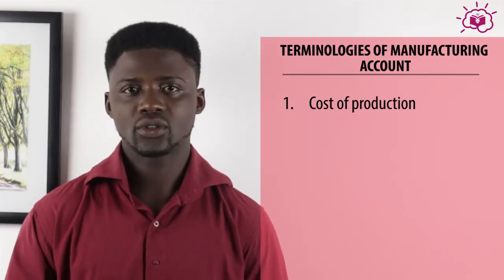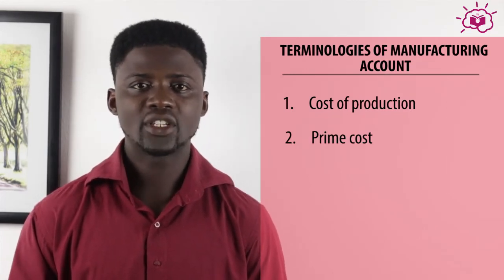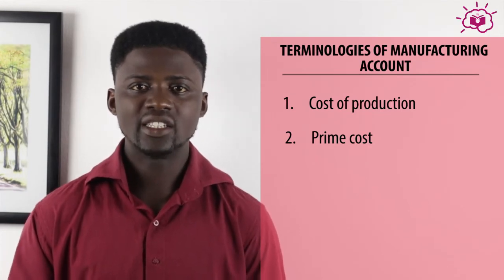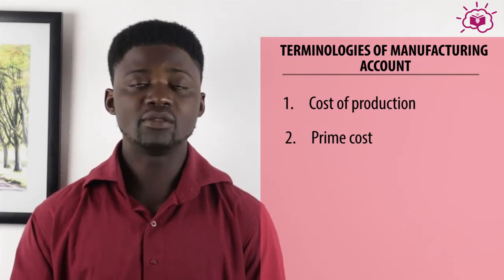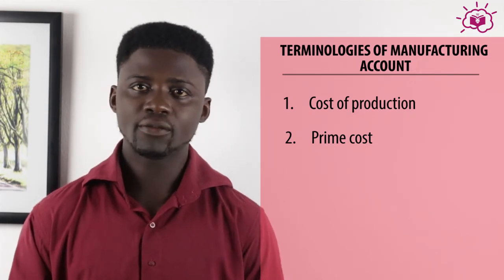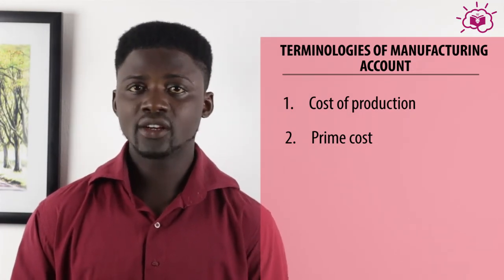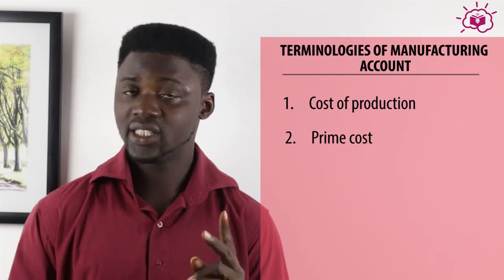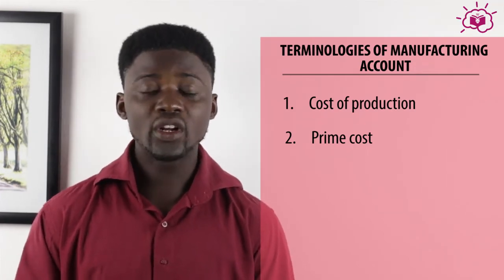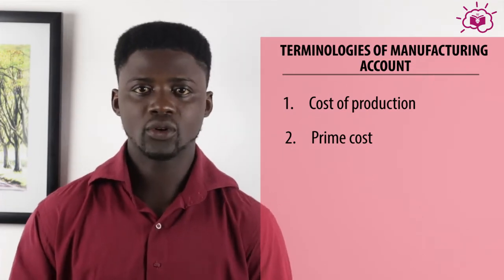Let's also look at prime cost. Prime costs are costs that can be traced to a particular production unit — they are directly related to the manufacturing process. Prime cost has four components: direct material, direct labor, direct expenses, and other expenses. These are what make up prime cost.